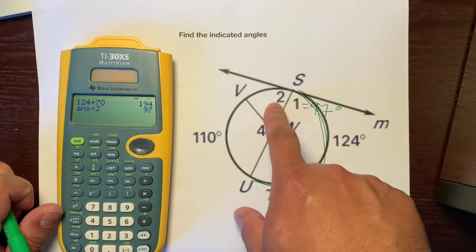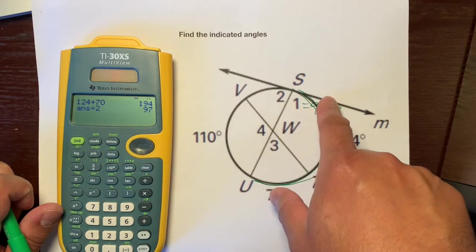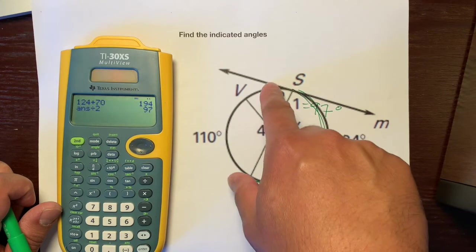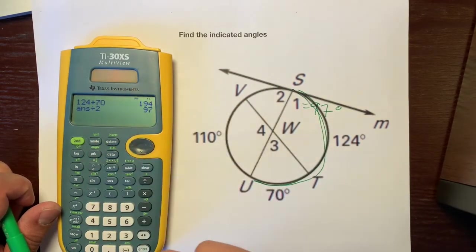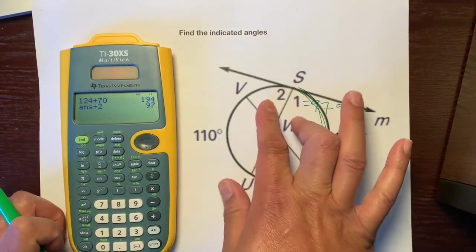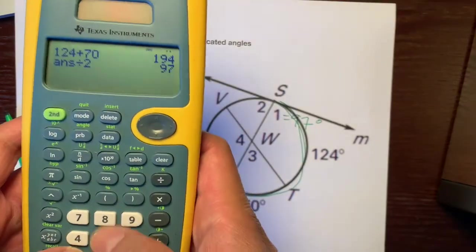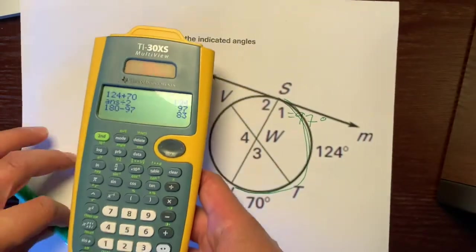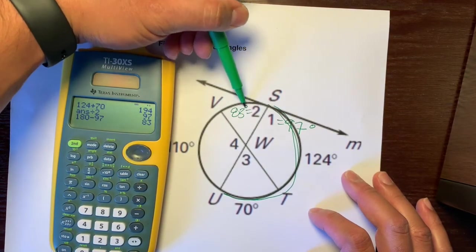We could figure out angle two fairly easily because this is a line, which means that these two angles here are supplementary or a linear pair. These two angles add up to 180 degrees. Don't say these angles equal 180 degrees because this doesn't equal 180, this equals 97. But the two of them together add up. So we take our calculator and type in 180 and subtract 97 from it and it's 83. So angle two is 83 degrees.